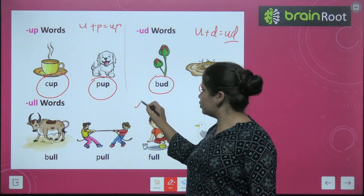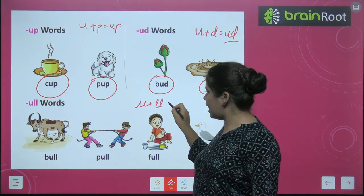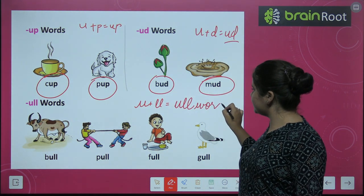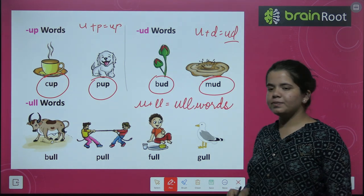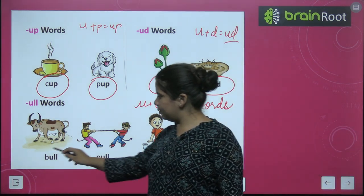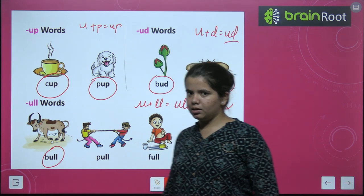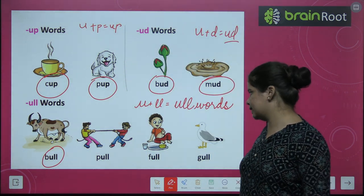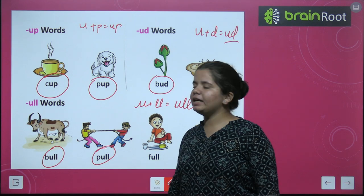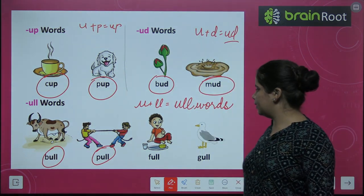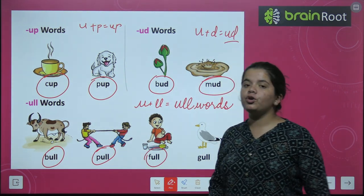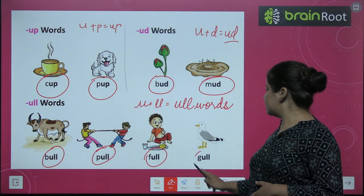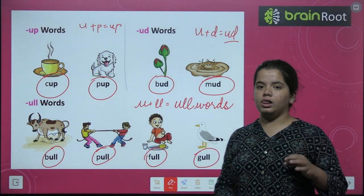Next is U plus L, -ul words — where you hear the -ul sound. The -ul words are: B-U-L, bul. P-U-L, pul. F-U-L-L, full. G-U-L-L, gull.